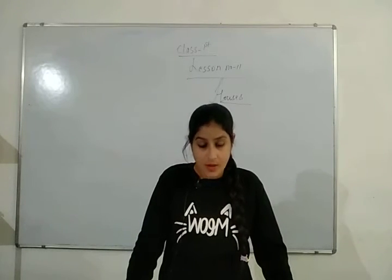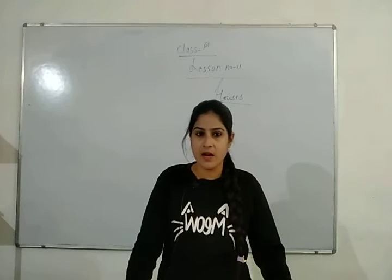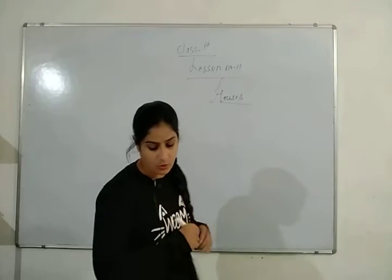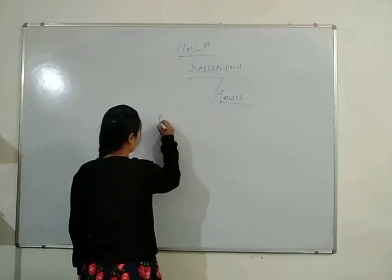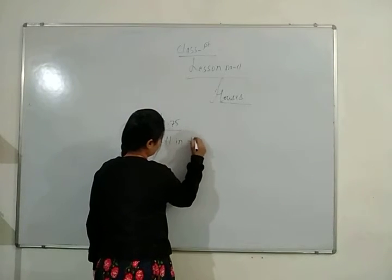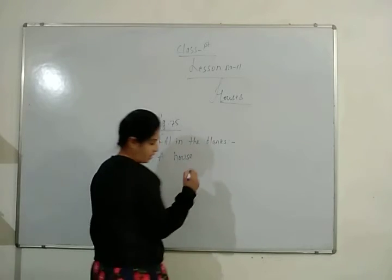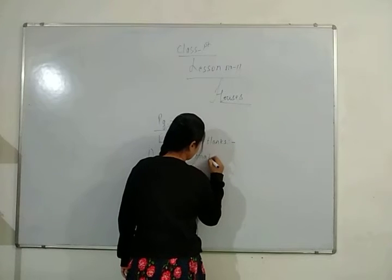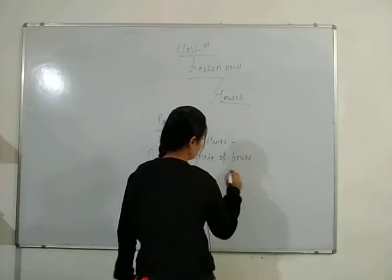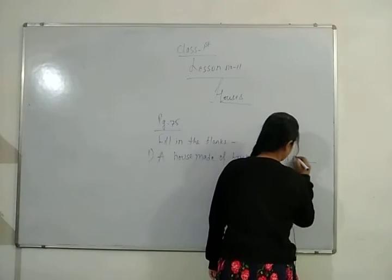Now fill in the blanks. Page number 75. First blank: A house made of bricks is called a pukka house. The house that is built with bricks and stones is called a pukka house, which is very strong.